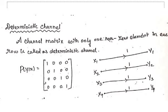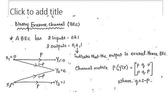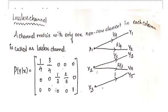The last one is deterministic channel. A channel matrix with only one non-zero element in each row is called a deterministic channel. Here we see an example with five inputs and five outputs. If you plot the probability in the channel matrix and look at each row, you can find only one non-zero element — that's why it is called a deterministic channel. So in this video, we saw binary symmetrical channel, binary erasure channel, lossless channel, and deterministic channel. Thank you for watching this video.